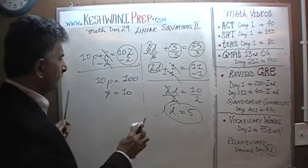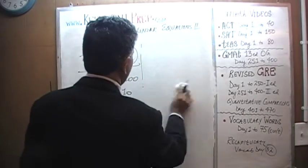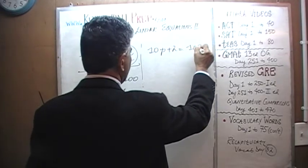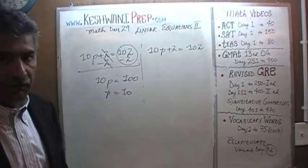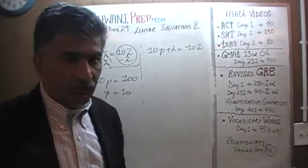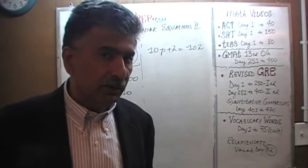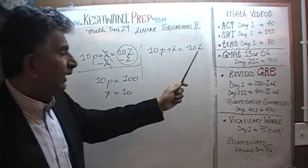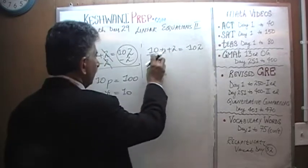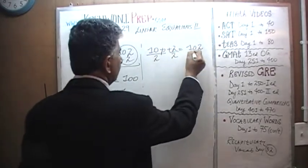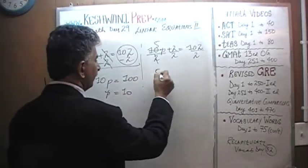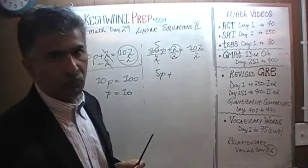What else could we have done with it? Let's take a look. 10p plus 2 equals 102. We notice that 10 is a multiple of 2, 2 is a multiple of 2, and 102 is a multiple of 2 because it's an even number. We could have divided the entire equation by 2 from the very beginning — dividing every term on both sides by 2.